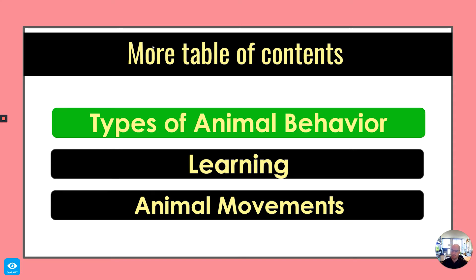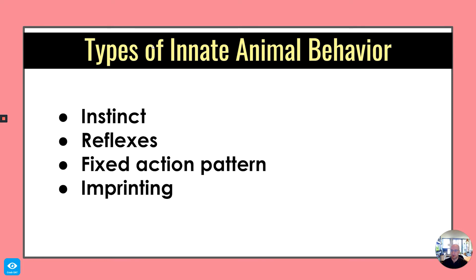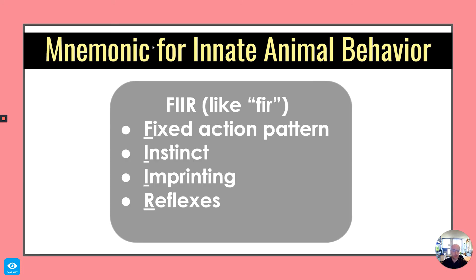So let's talk about types of animal behavior. There are multiple types of innate animal behavior, like instinct, reflexes, fixed action patterns, and imprinting. And we're going to go over each of these.